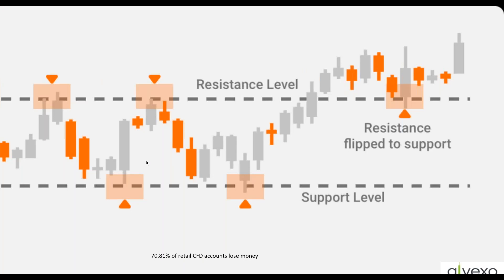Too many of my new traders — and too many experienced ones — get too wrapped up in support and resistance levels. I tell you: take the words support and resistance and use them interchangeably. Just call them price levels. When price is moving up, it's resistance; when price has broken through and comes back down to it, it's your support. They flip-flop depending on which way price is moving. It's just an important price level in the journey up and the journey down.